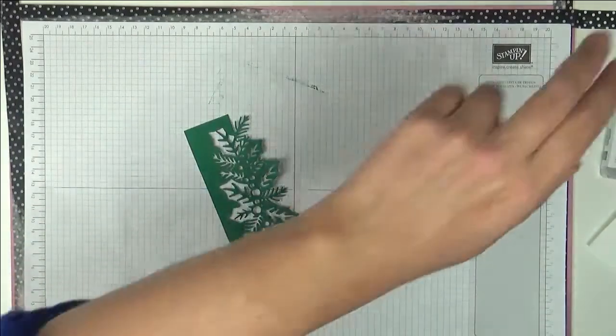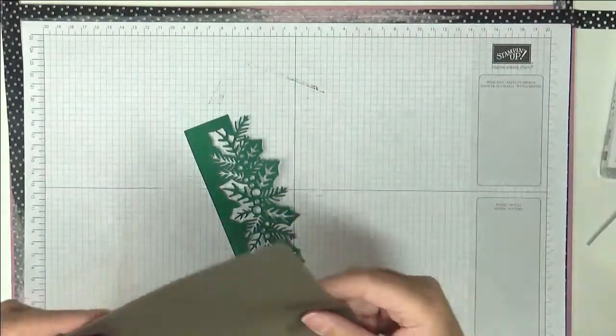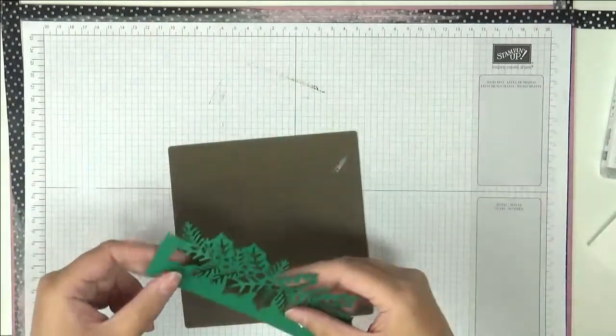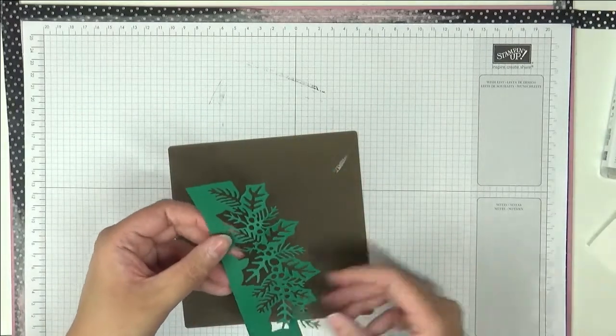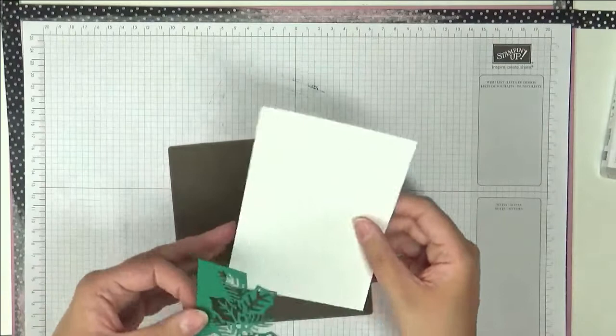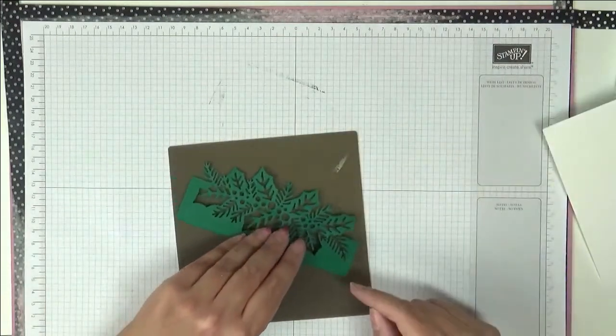We're just going to place our die cut here on the corner. So I'm just going to get my silicone mat so I can do some gluing. You can choose which way you want it. I'm trying to think which way do I want it. Yeah, that'll do.